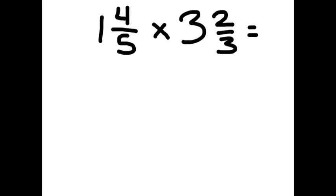Here's a tougher one. To make it easy, change the mixed numbers to improper fractions. So 1 times 5 is 5, plus 4 is 9 fifths.